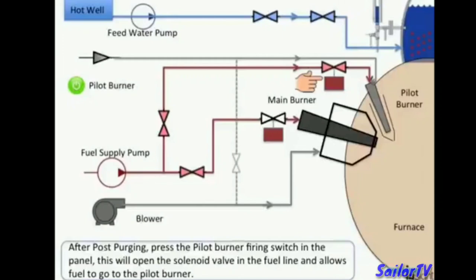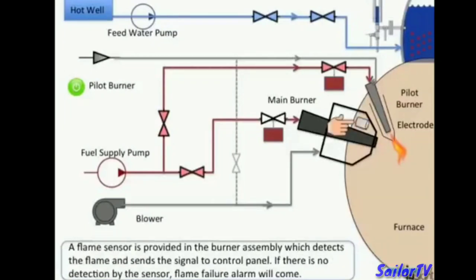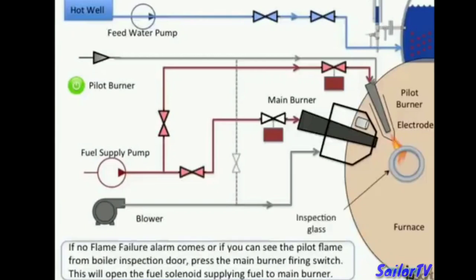After purging, press the pilot burner firing switch on the panel. This will open the solenoid valve in the fuel line, allowing fuel to go to the pilot burner. After a set period of time, the electrode will get energized and create a spark — in the presence of fuel and air, a pilot flame will be generated in the furnace. A flame sensor in the burner assembly detects the flame and sends a signal to the control panel. If no flame is detected, a flame failure alarm will be sounded.